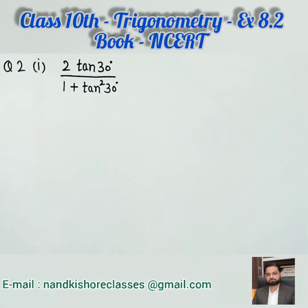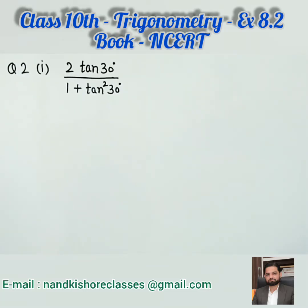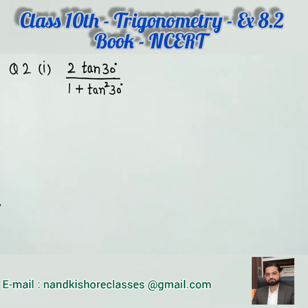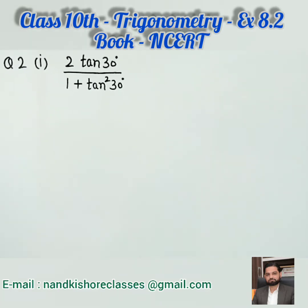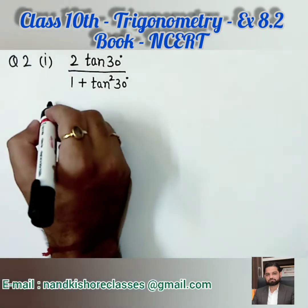Hello students. Today we are going to continue Exercise 8.2 and we are going to start question number 2. Yesterday we were done with question number 1, all the parts. Look at the first part on the screen: 2 tangent 30 degrees over 1 plus tangent square 30 degrees. There are 4 options in the book. Let us see which option will be correct. We need to solve in the same way we learnt yesterday.